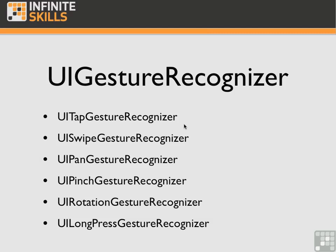The UILongPressGestureRecognizer looks for long press gestures. The user must press one or more fingers on a view for at least a specified period of time for the action message to be sent. Also, the fingers may move only a specified distance for the gesture to be recognized — if they move beyond this limit, the gesture fails. The long press gesture is also continuous. It is recognized as beginning — UIGestureRecognizerStateBegan — when the required number of fingers, set by numberOfTouchesRequired, have been pressed for the minimumPressDuration and have not moved beyond the allowableMovement property. It transitions to the changed state whenever a finger moves, and ends — UIGestureRecognizerStateEnded — when any finger is lifted. When one of these objects recognizes a gesture or a change in the gesture, it sends an action message to each designated target object.